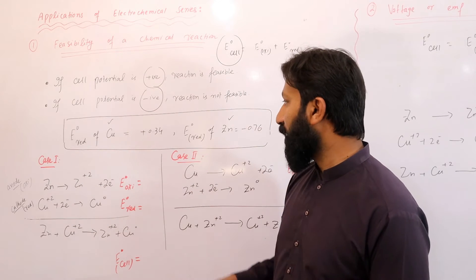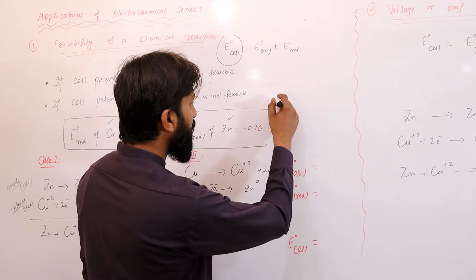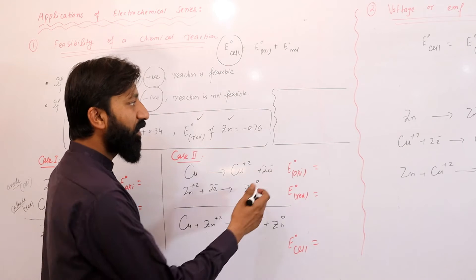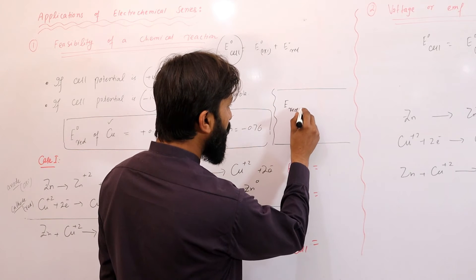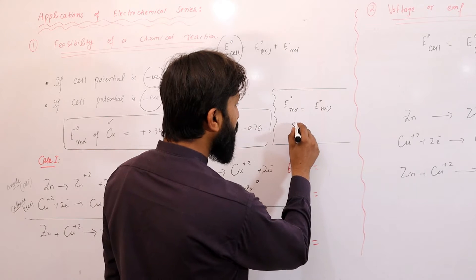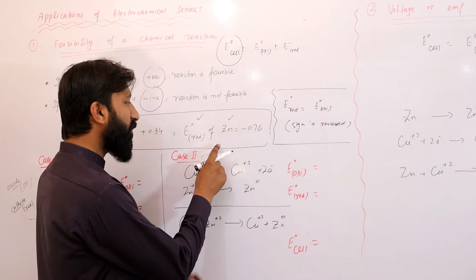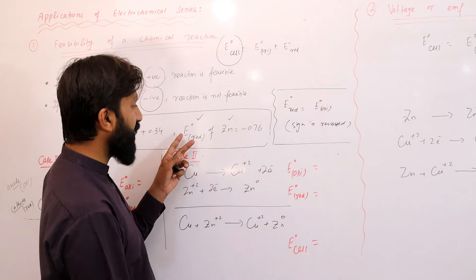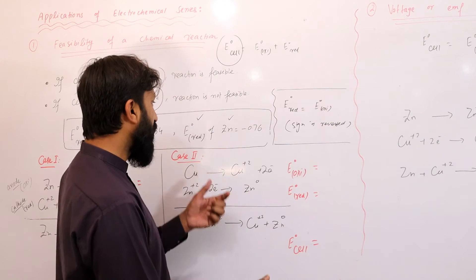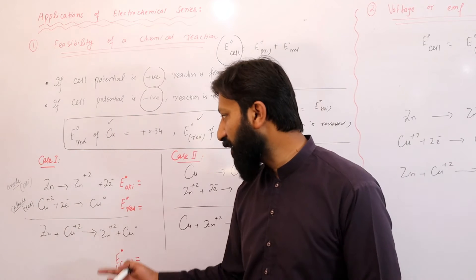यहाँ पर zinc की oxidation हुई तो हम बात करेंगे oxidation potential of zinc की। Electrochemical Series में zinc की reduction potential की value minus 0.76 है। Sign reverse होता है — जिस element की reduction potential कम होती है उसकी electron gain करने की ability कम होती है, और oxidation potential यानी lose करने की ability उतनी ज़्यादा होती है। तो zinc की oxidation potential की value बनेगी plus 0.76।